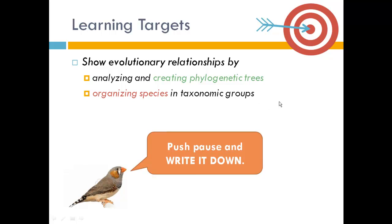So let's take a closer look at two different ways that we can organize living things that actually show meaning about those living things. We're going to look at the first strategy, how to create phylogenetic trees, and the second strategy, how to organize living things based on their taxonomy or their taxonomic groups.